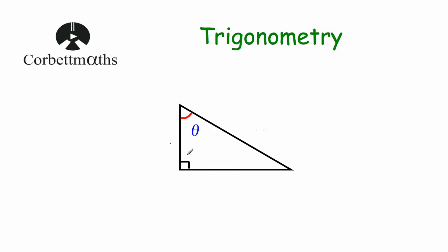So let's label our three sides. Whenever I'm labeling the sides of a right-angled triangle, the first side that I always label is the hypotenuse. The hypotenuse is the longest side of a right-angled triangle, and it's always opposite the right angle. So here's the right angle, so the side opposite the right angle — this side — is the hypotenuse. So that's our first side labeled.